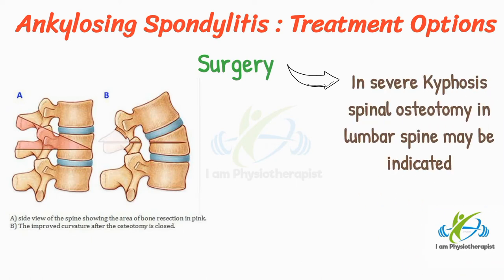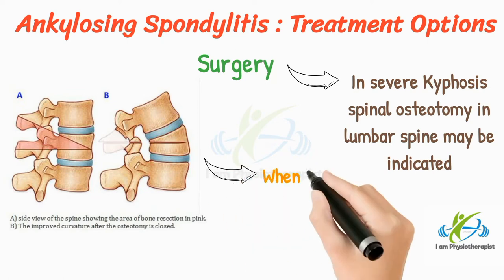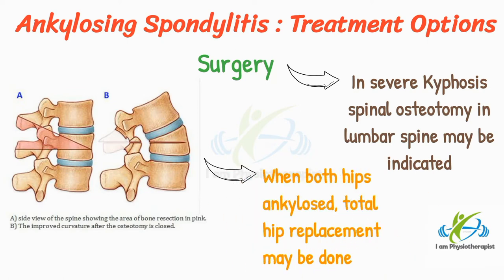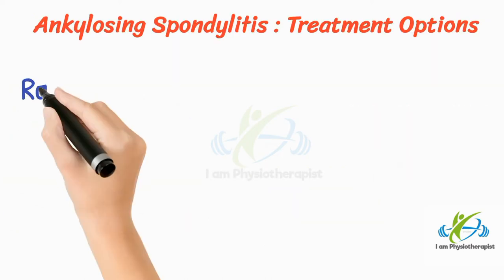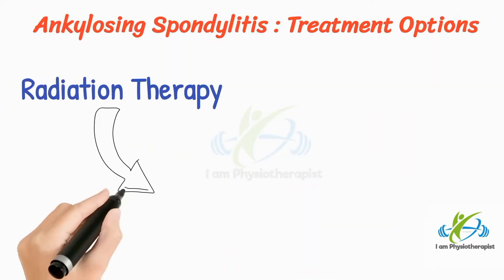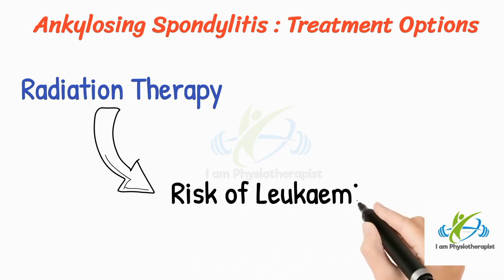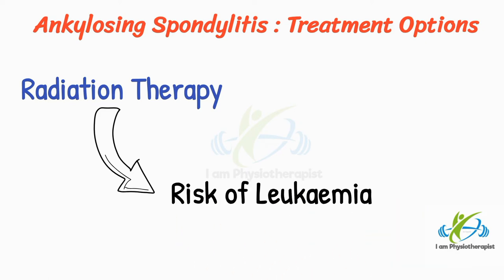In advanced cases, surgery may be required. In cases with severe kyphosis, spinal osteotomy in the lumbar spine may be indicated. When both hips are ankylosed, total hip replacement may be done. Radiation therapy is also effective for the spine, but it carries the risk of leukemia.